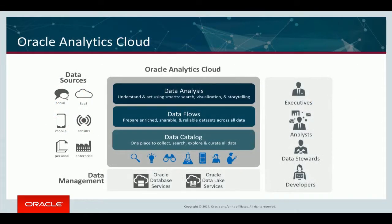Behind the scenes, OAC goes and gets information from all these different sources. A key element is to really enable business users and business analysts to ask questions and interact with the data to get their job done — not be dependent on specialized skill sets that might be bottlenecks. From an architecture perspective, Oracle Analytics Cloud connects and gathers information from various sources and can move it into a data warehouse or data lake. We have several layers: first the catalog for indexing and search, then transformations and enrichments, and finally data analysis for exploring, visualizing, sharing, and collaborating on insights.